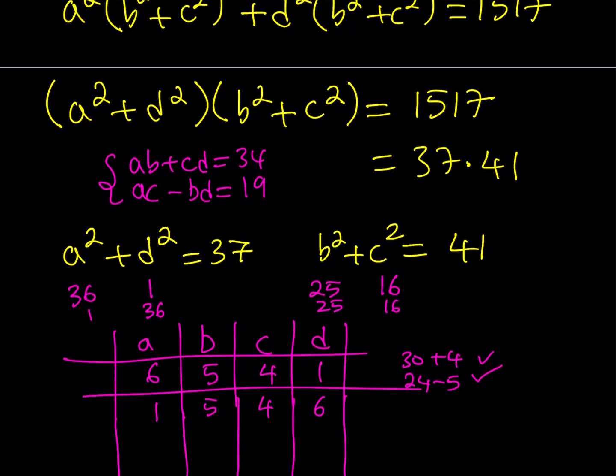Now would this work? Let's check it out. AB is going to be 5. CD is going to be 24. 5 plus 24, unfortunately, does not equal 34. So this is not going to work.